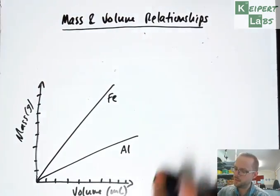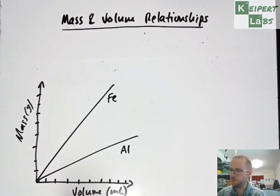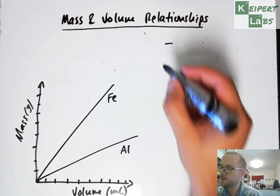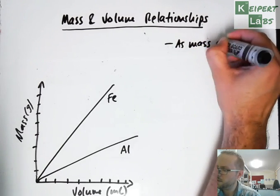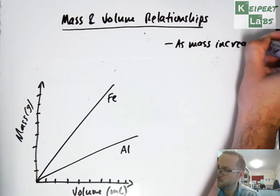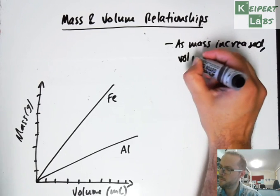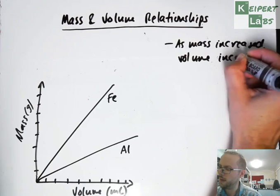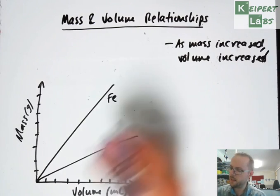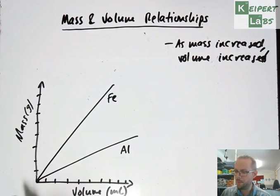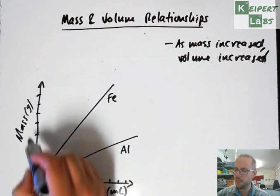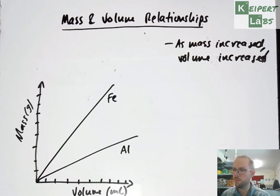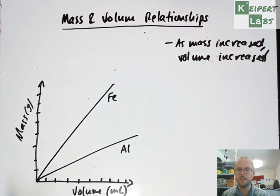There's a couple of takeaway points that we can get from this graph. The first one is that for each line, as mass increased, so did volume. Looking at a general sort of relationship, seeing that we had it sloped up, that as we got a bigger piece, a piece with a bigger volume, it had a larger mass. As we got a larger mass piece, it increased in volume. So it took up more space than smaller pieces did.